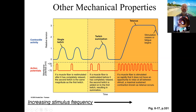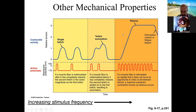As we increase the stimulus frequency, we still get the initial contraction, but as the muscle is starting to relax, we give it a second stimulus — and the second peak is greater than the first. This is known as summation. Ramping up the frequency further, there is no relaxation at all, and the amplitude of strength is much greater. This is tetanus: no relaxation and a maximal sustained contraction.